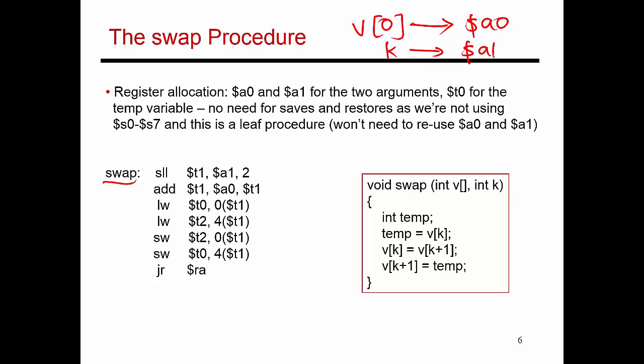Now I obviously need to first find the value of vk. How do I get the address of vk? The address of vk is address of v0 plus, because these are integers, it's going to be 4 times k. To compute this, I take a0, my first argument register which contains the address of v0, and then I'm going to add 4 times k, which is register a1.